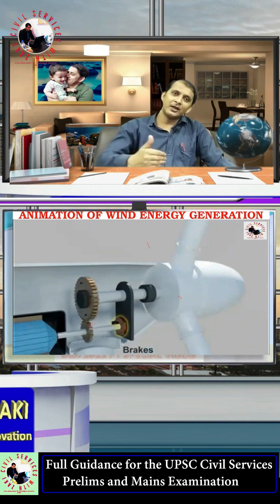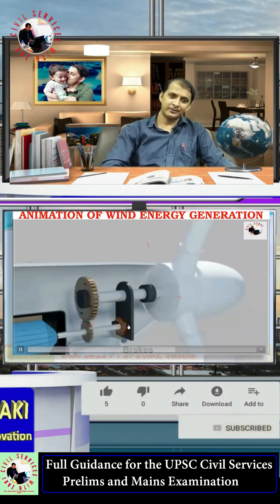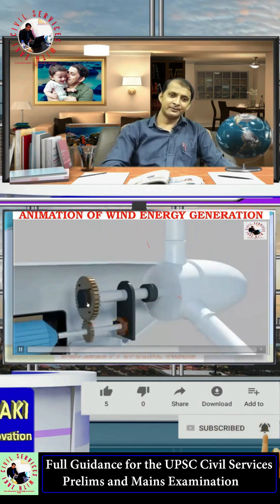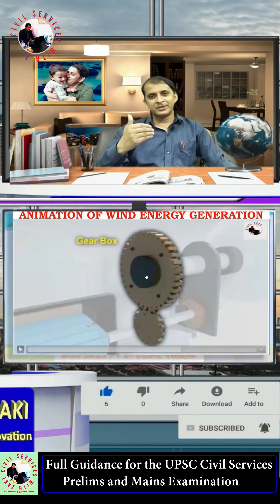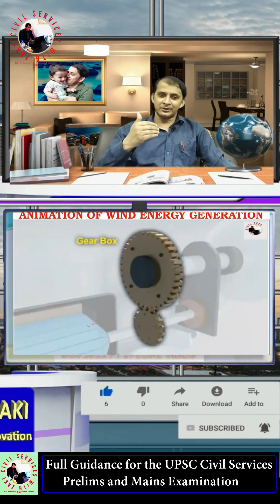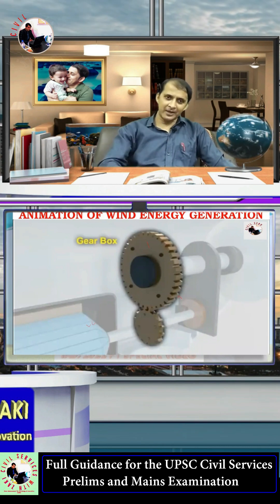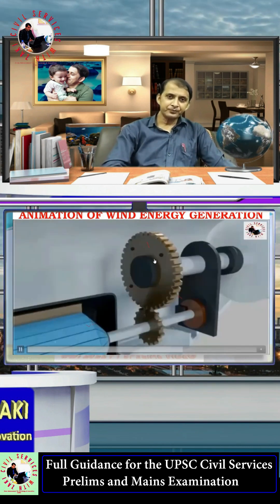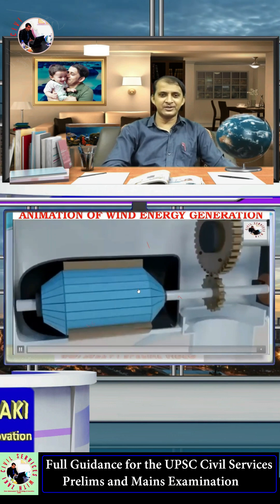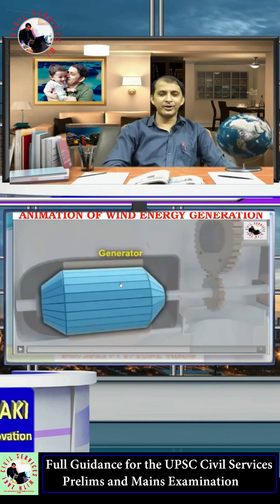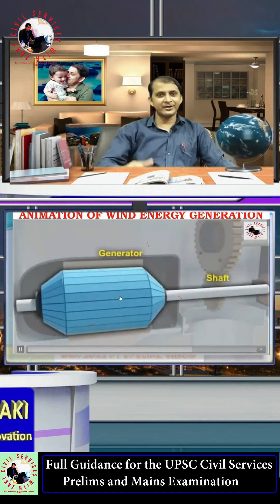If the wind speed increases too much, a brake is installed to control the rotation of the wind turbine. There is also a gearbox, which is used to utilize the maximum speed from the turbine and transfer it efficiently to the generator.